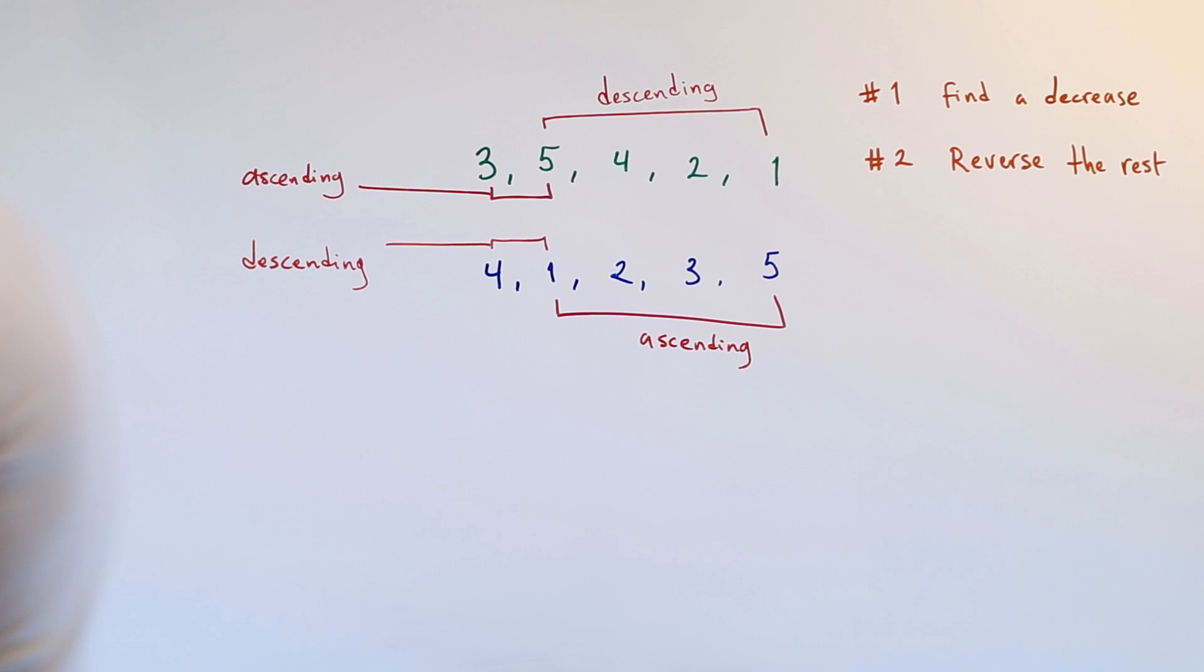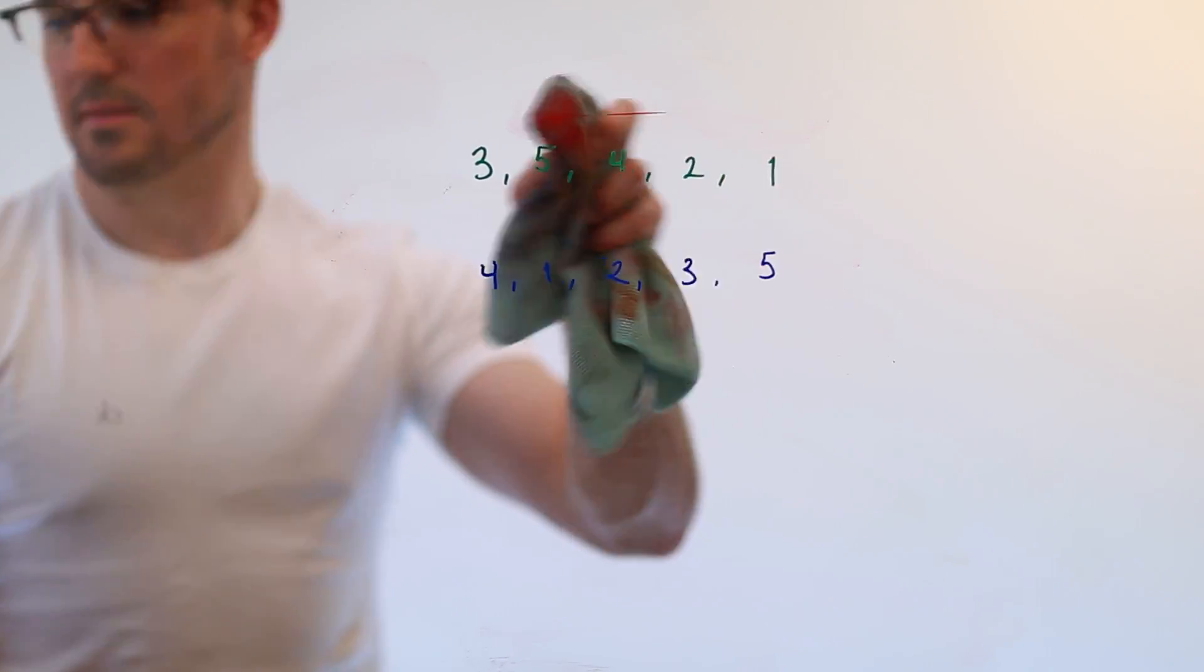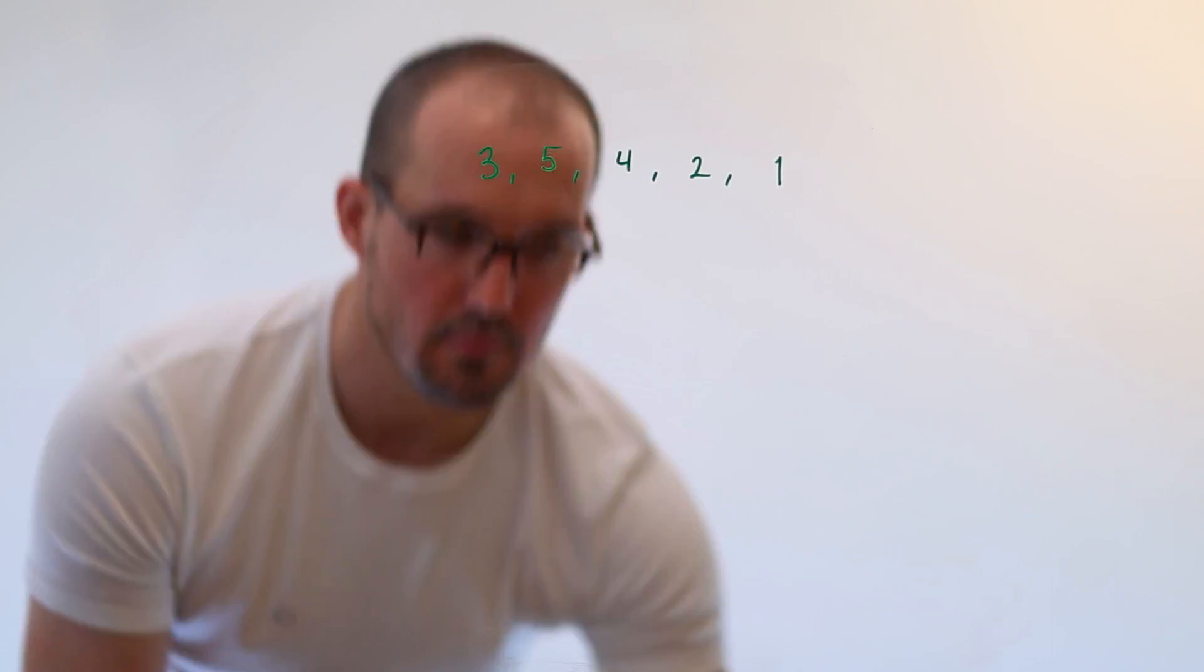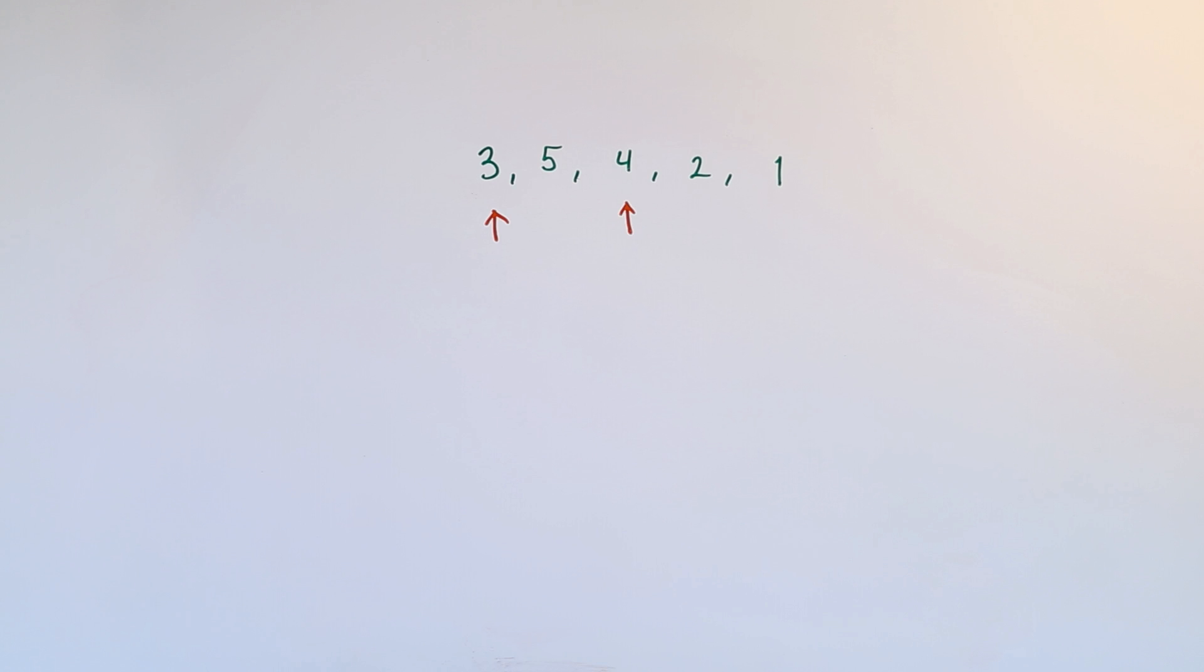But those two numbers are only off from each other by one digit. There's one misplaced digit in the three, one, two, four, five case from the four, one, two, three, five case. And that is that the three and the four are misplaced. And that's the third grip of this problem. That's the third tricky thing to notice.